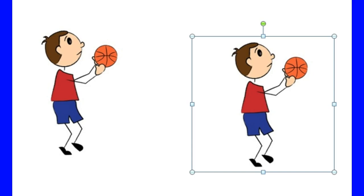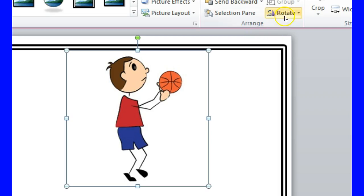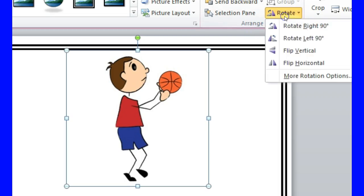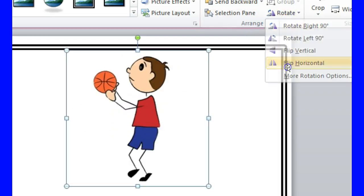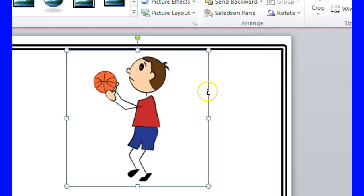All I need to do is find the image that I want to rotate — and the key point is selecting the perfect image. Here he's going to the right and I'm going to rotate him to go to the left. I double-click on the image I want, then click Rotate, flip him, and there we go.